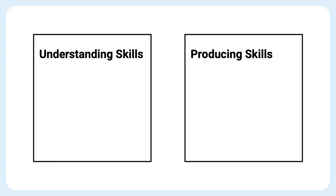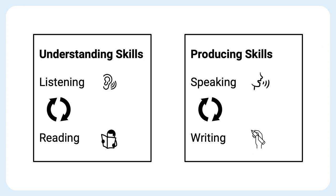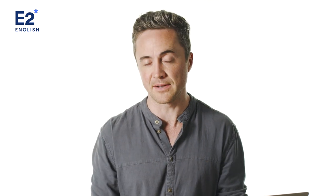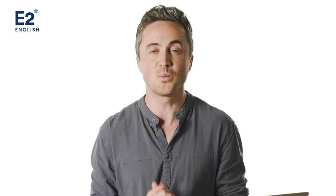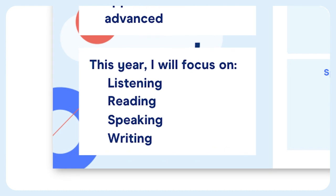You understand listening and reading, and you produce speaking and writing. It's important to understand the difference here, because these are very different skills — they actually use different parts of your brain. Practicing listening improves your reading and vice versa, and practicing speaking improves your writing and vice versa. But practicing listening and reading doesn't really help your speaking and writing. In general, you'll probably find it easier to learn to listen and read, and more challenging to learn to speak and write. On your goal setter PDF, write down which skills you most want to improve in 2022, in order from one to four.